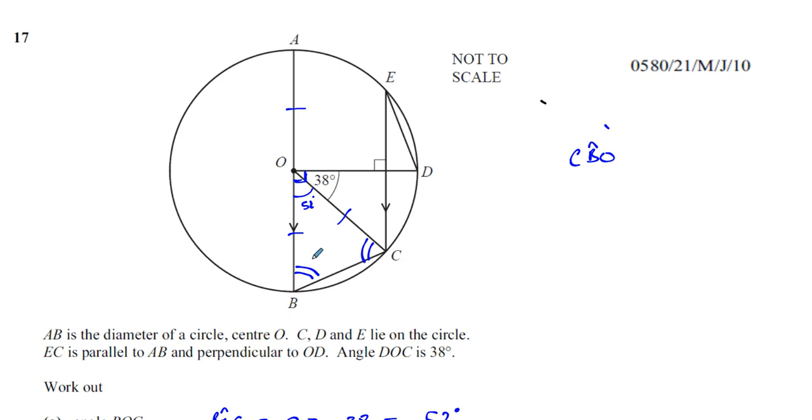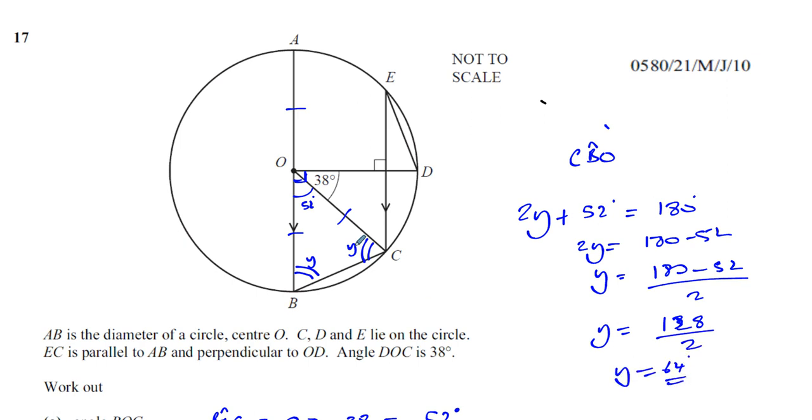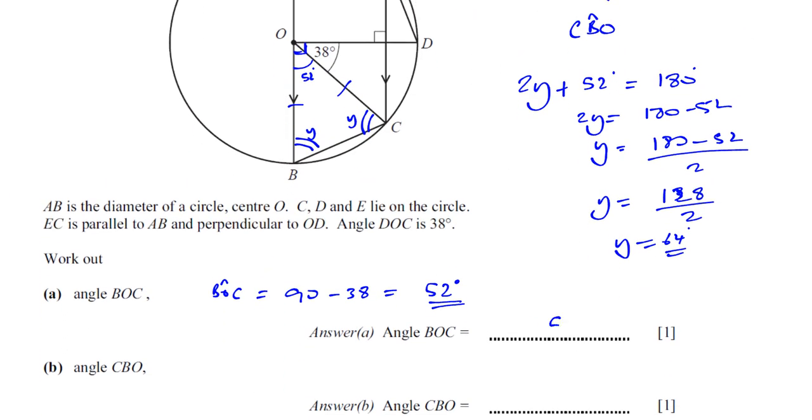If that's the case, then CBO, which is this angle here, we call it angle Y. We know that this is also angle Y. They're both the same angle. So we can say that 2Y plus 52 degrees is equal to 180. The sum of the angles in the triangle is 180. So 2Y is equal to 180 minus 52. So Y is equal to 180 minus 52 divided by 2. That gives you 64 degrees. So that's the angle that we need here. So this is 52 degrees and this is now 64 degrees.